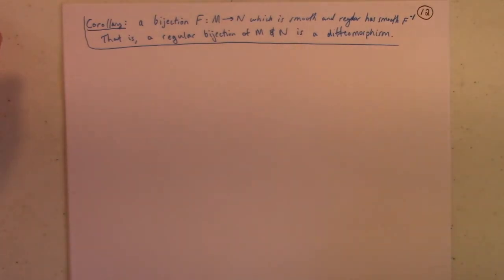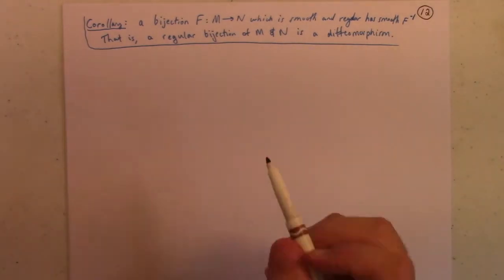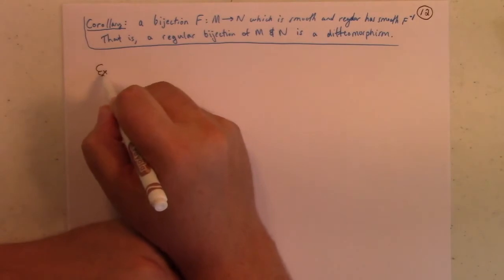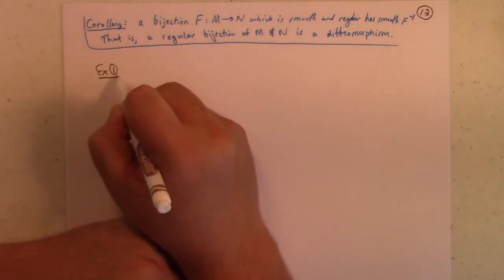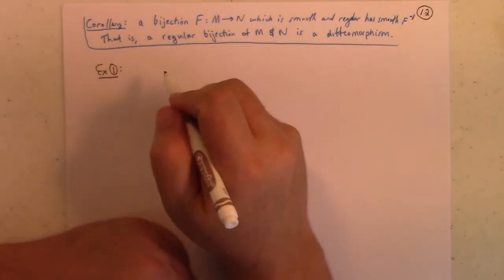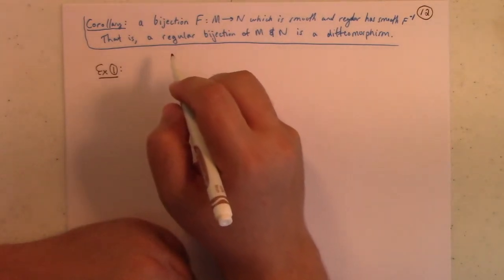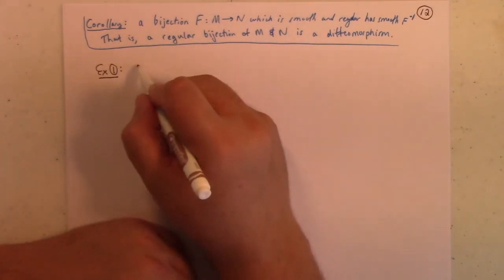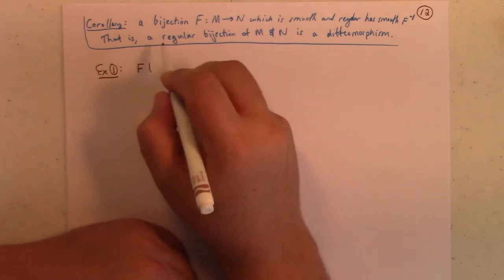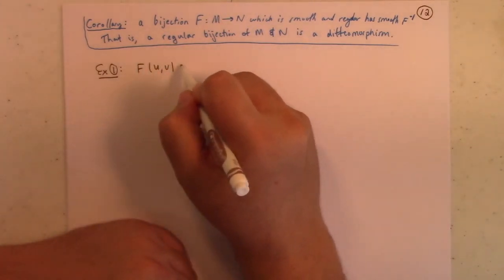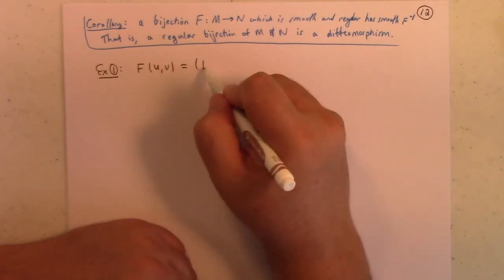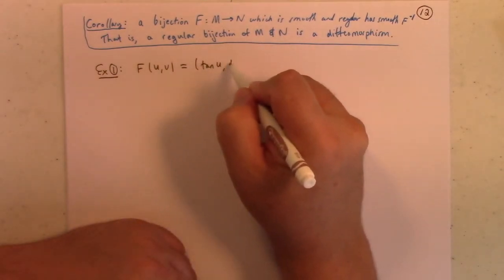Okay, so some examples of diffeomorphisms are worth looking at. And I'll follow O'Neill, I think his examples are really nice. So, one he has is an open rectangle and the plane. And I like O'Neill's style, I will again follow him.